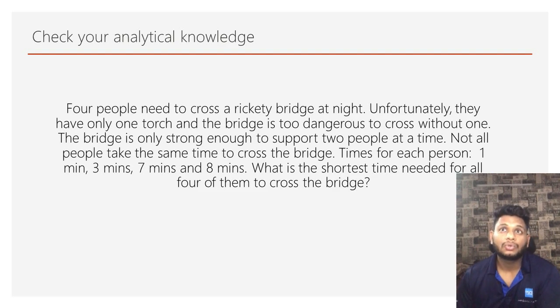So, four people need to cross an electric bridge at night. Unfortunately, they have only one torch and the bridge is too dangerous to cross without one. The bridge is only strong enough to support two people at a time. Not all people take the same time to cross the bridge. Times for each person: 1, 3, 7, 8 minutes. So what is the shortest time needed for all four of them to cross the bridge? You have to solve this puzzle in 5 to 7 minutes.